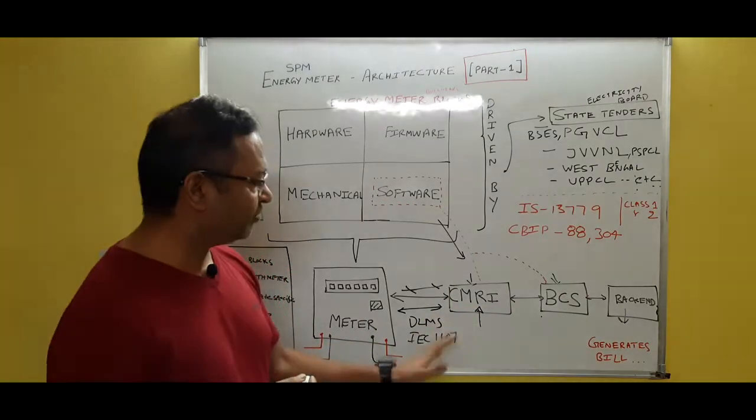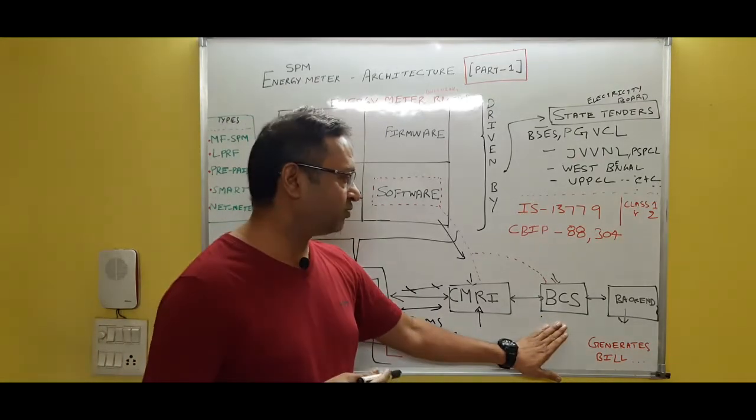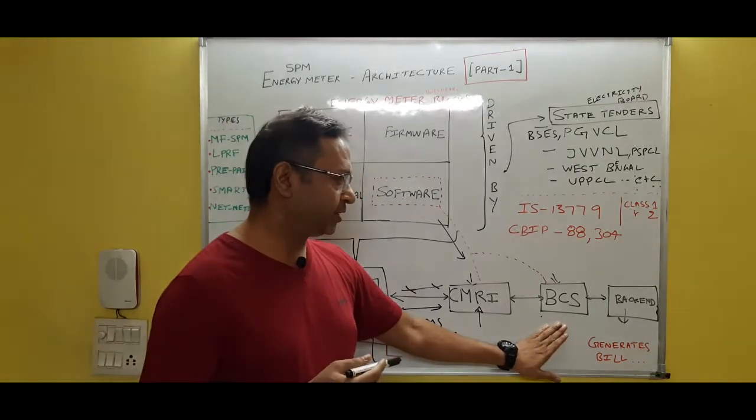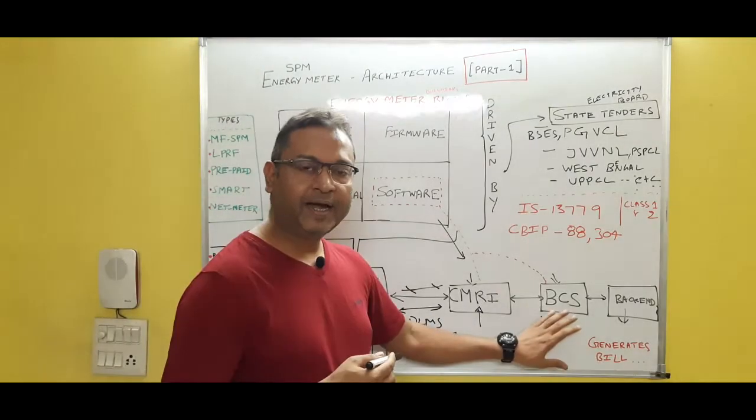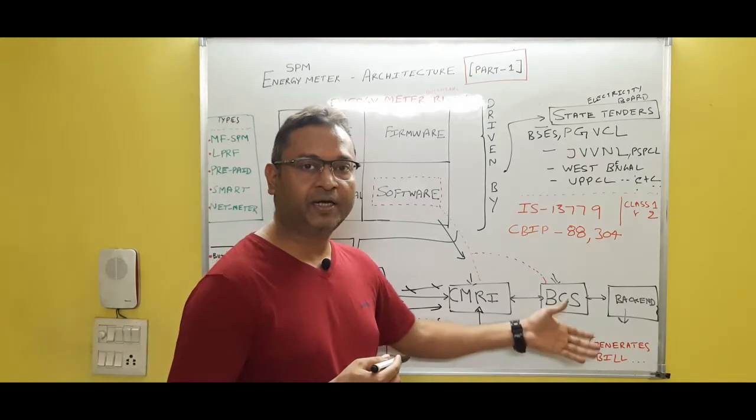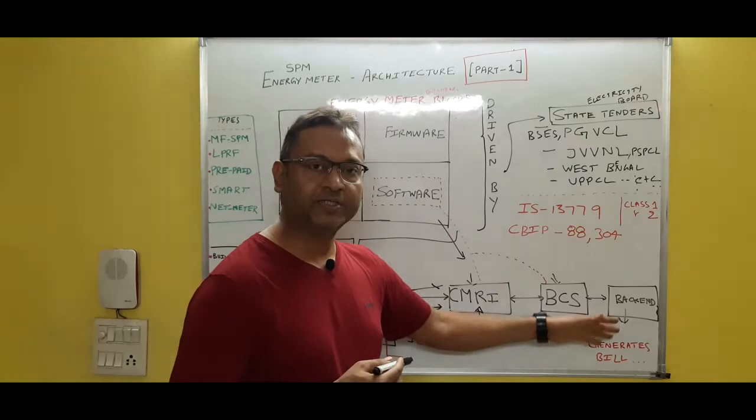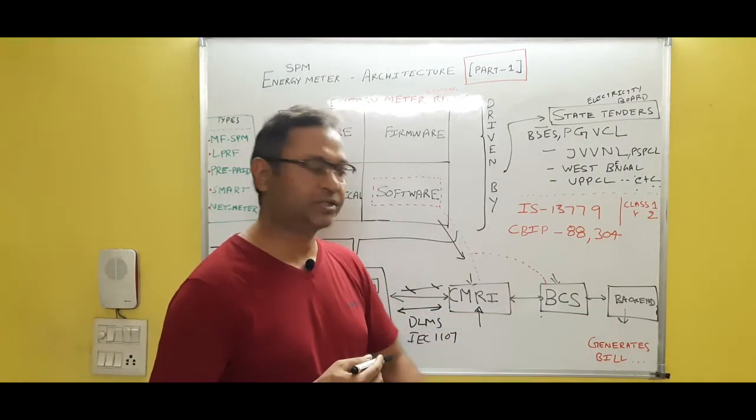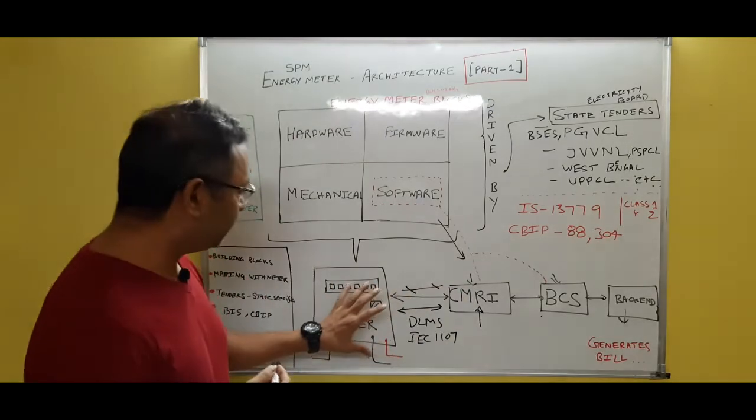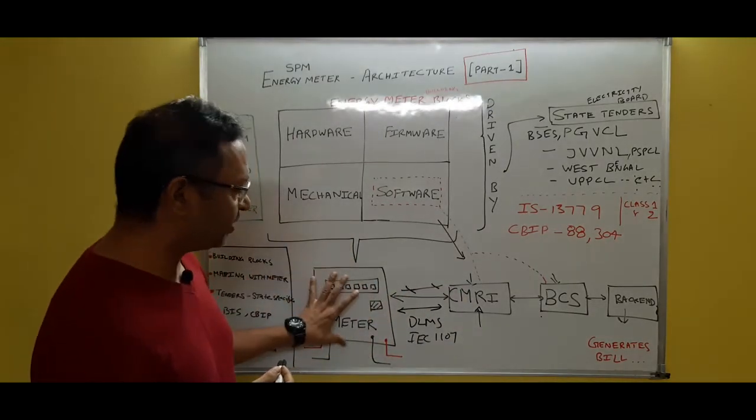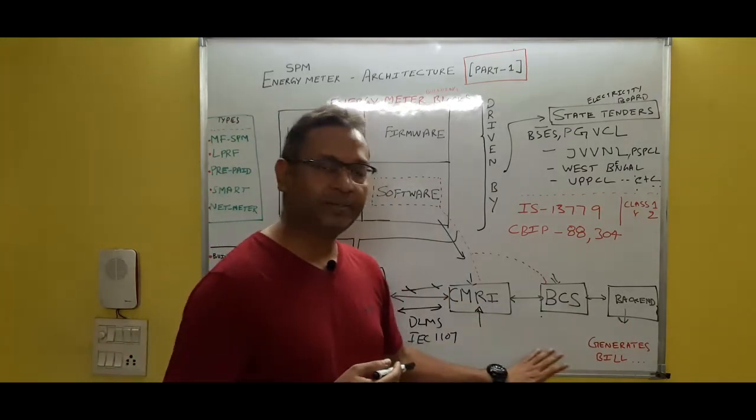So the meter reader captures all this reading through this instrument CMRI equipment and then goes back to the office. And in the electricity office it connects this CMRI equipment to the BCS. BCS stands for Base Computer Software, and here in the BCS it loads all the data into the BCS and this BCS software generates the file in a particular format which is processed by the back-end system to generate the billing to individual customers.